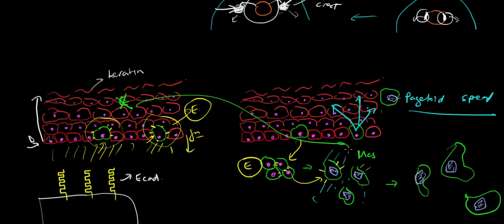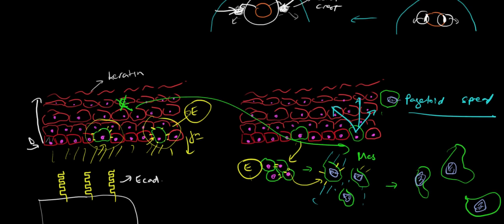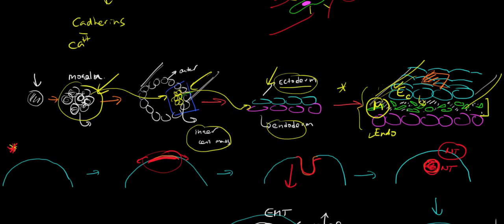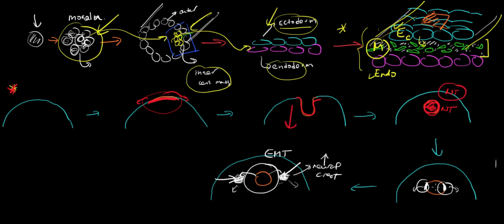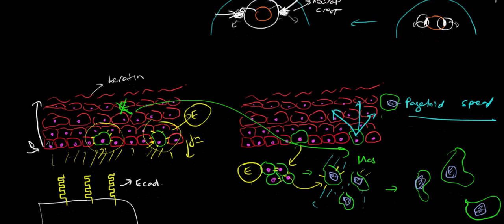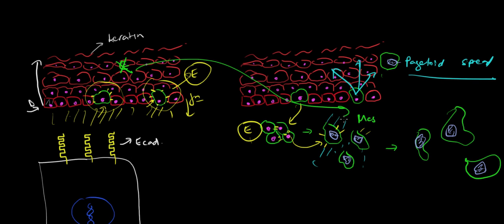The way melanocytes become melanoma is by using a program that's present in development that sometimes serves a good purpose — this process of enabling cells to bud off epithelia and walk around, this epithelial to mesenchymal transition. Sometimes it occurs in the normal developing context of embryology and it's good. But tumor cells can hijack that embryological process and use it for bad purposes — using the same program at the wrong time and in the wrong way to lose their adherence and dependence on one another and be able to walk around.